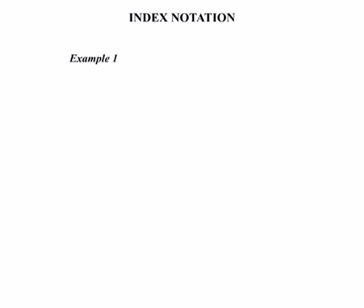Let's have a look at some examples with index notation. For number 1, we're asked to write the following in index form. Starting with part A: we've got 2 times 2 times 2. That 2 is repeated all the way through, so it'll be our base number. How many times are we multiplying the 2 together? Three times — so our power will be 3, giving us 2 to the power of 3.